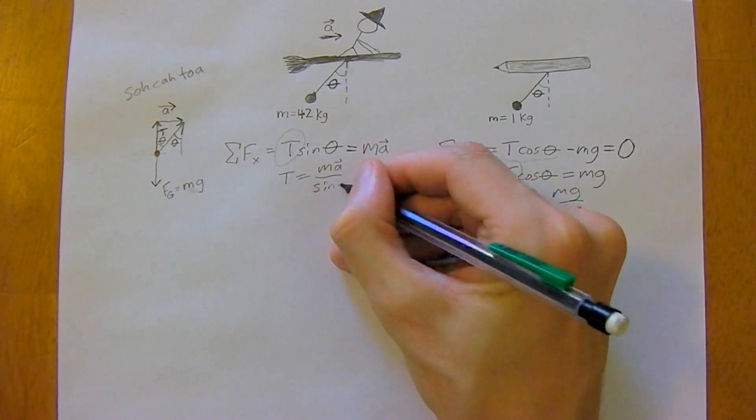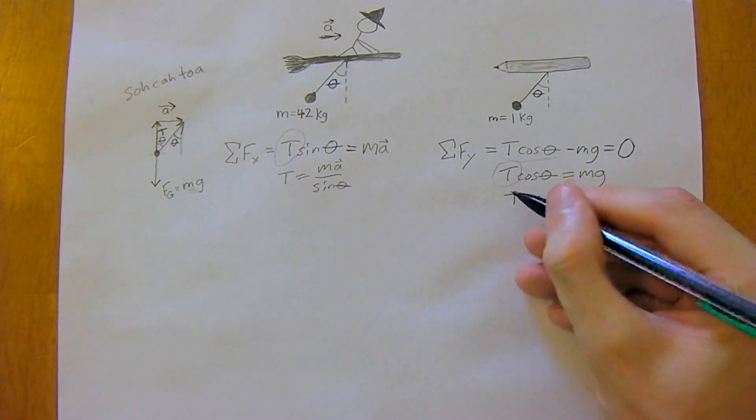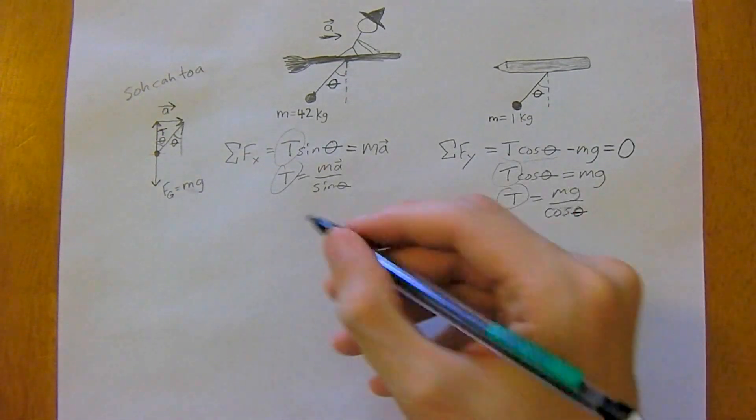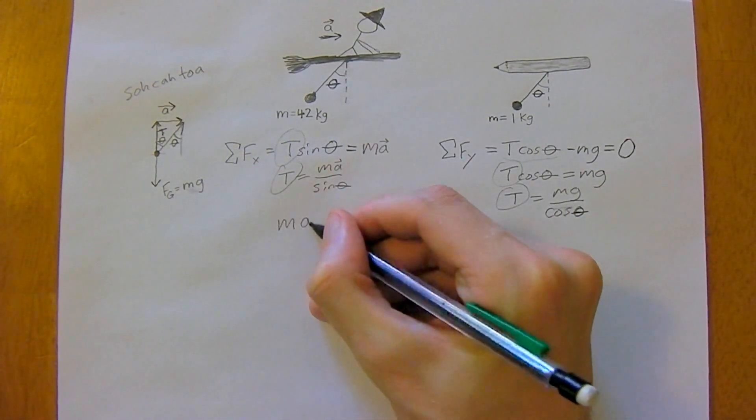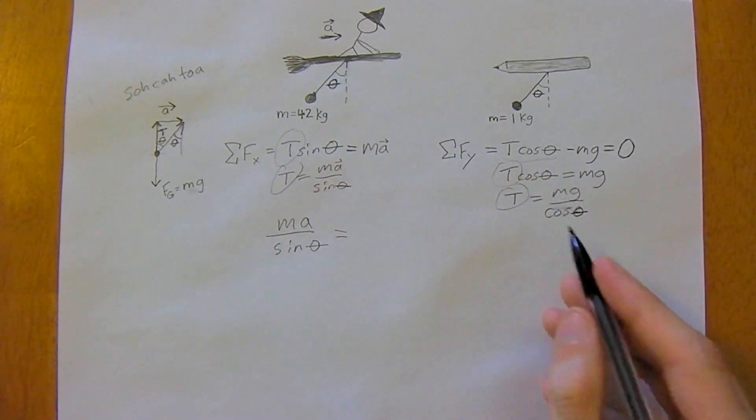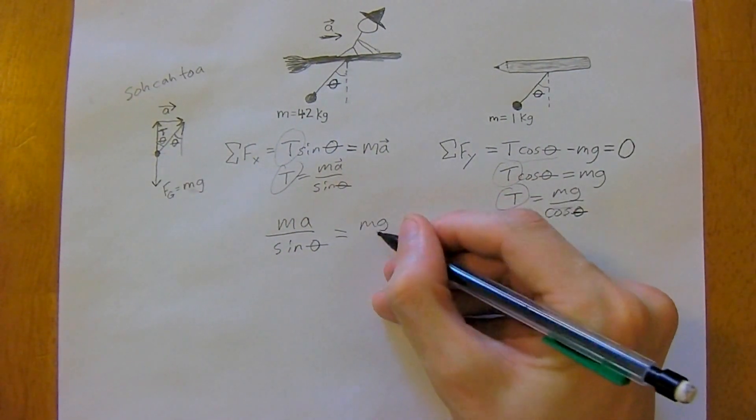On this side we need to get tension by itself, so we're going to divide both sides by sine theta. T and T—it's the same tension, it's the same hypotenuse—so we can just set them equal to each other. Ma divided by sine theta equals mg divided by cosine theta.